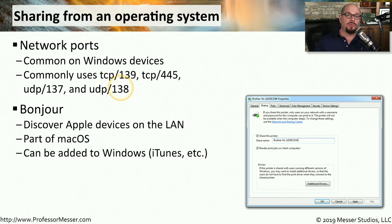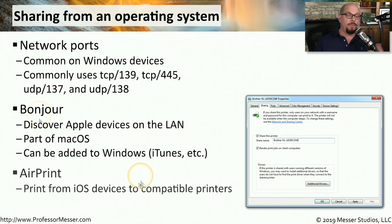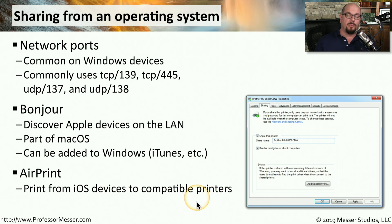If you're using macOS or other Apple devices, you may be using a protocol called Bonjour. This allows your Apple device to find other components on the network, including printers and multi-function devices. If you're on a Windows computer and you've installed some Apple software such as iTunes, you might also be using the Bonjour protocol. And if you have an iOS device, you have the option to print using a technology called AirPrint, which allows you to print directly from your iOS device to a printer that is AirPrint compatible.